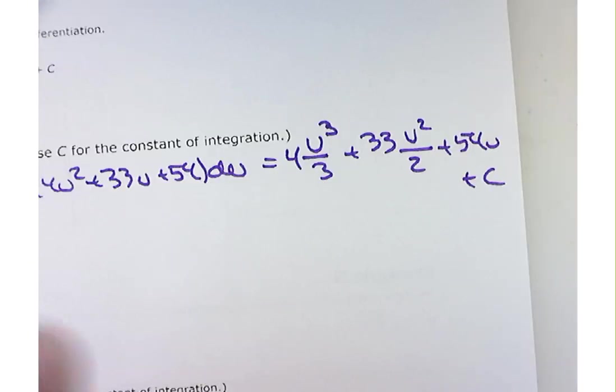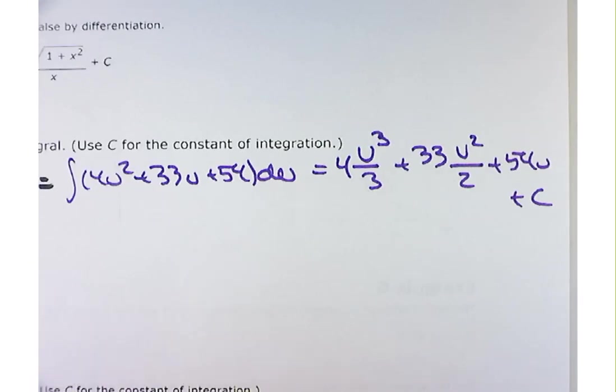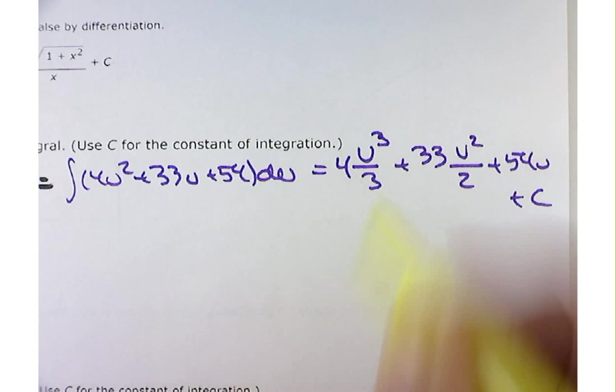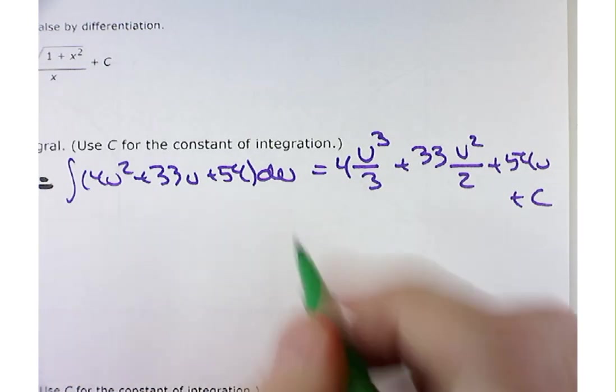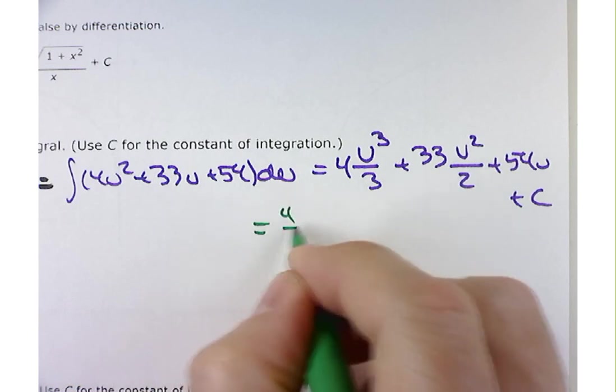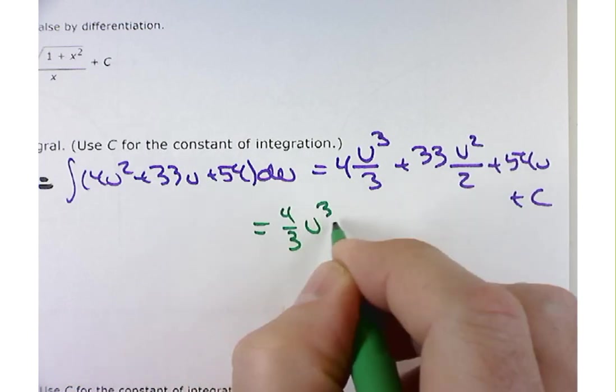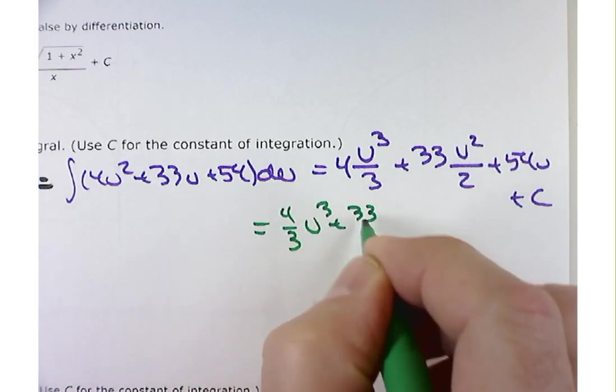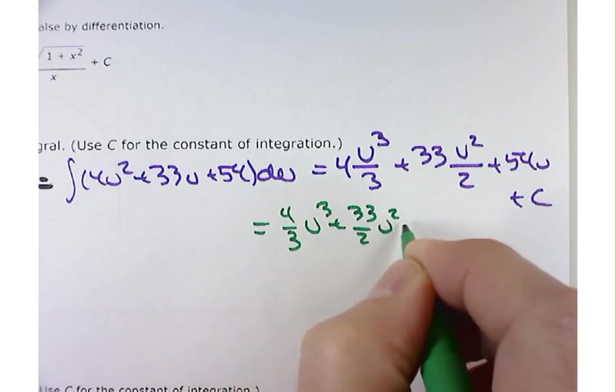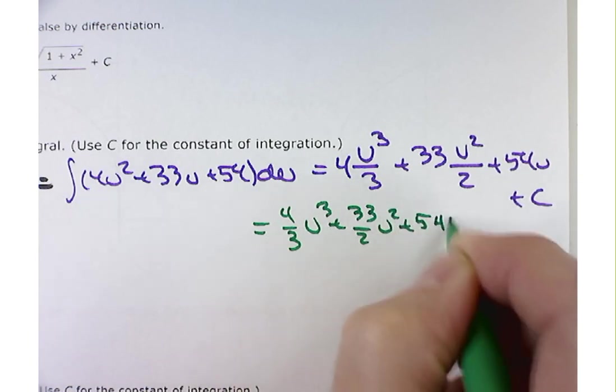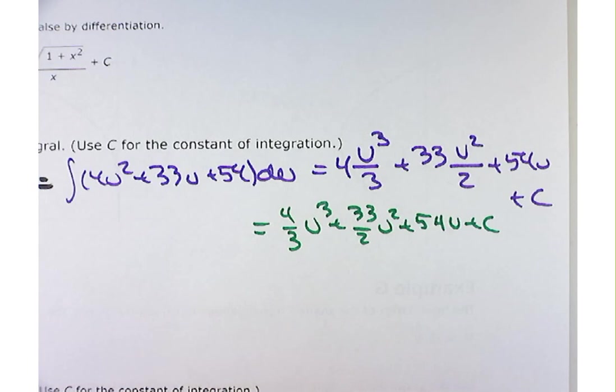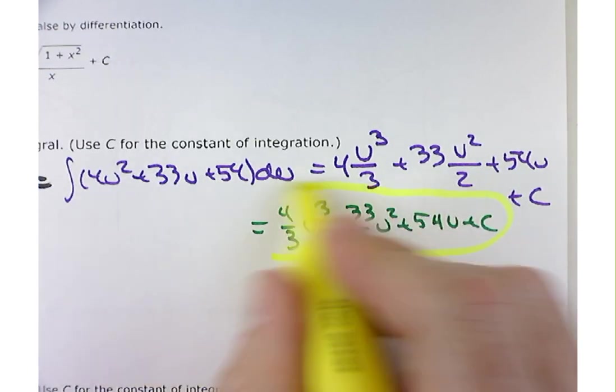And that's it. You're done. All you have to do is find the antiderivative. We could maybe clean this up a little bit, I guess. You could write that maybe as 4 thirds u cubed plus 33 over 2 u squared plus 54u plus a constant. But there's not a whole lot you can do to spruce that up. So, thank Matt.